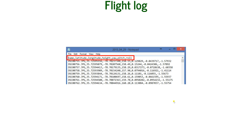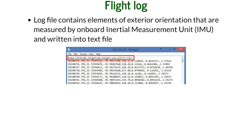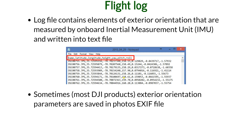Looking at the flight log, it contains the name, latitude, longitude, and altitude — and we can also see three additional numbers at the end. Those are the angles we just discussed. It contains all elements of exterior orientation, measured by the inertial measurement unit and written into a text file. It can also be written into the EXIF file of the photos. If you have any DJI products, you will find the exterior orientation written into the EXIF file.